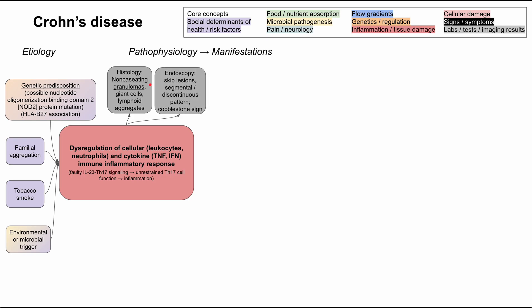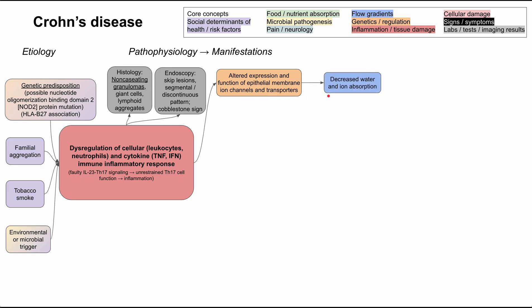On endoscopy, you'll see skip lesions — a segmental or discontinuous pattern, which is in contrast to ulcerative colitis. You might also see the cobblestone sign in Crohn's disease. There is also altered expression of epithelial membrane ion channels and transporters, resulting in decreased water and ion absorption in the gut, which leads to diarrhea. The diarrhea is typically chronic — lasting weeks to months to years. It's a recurring problem.